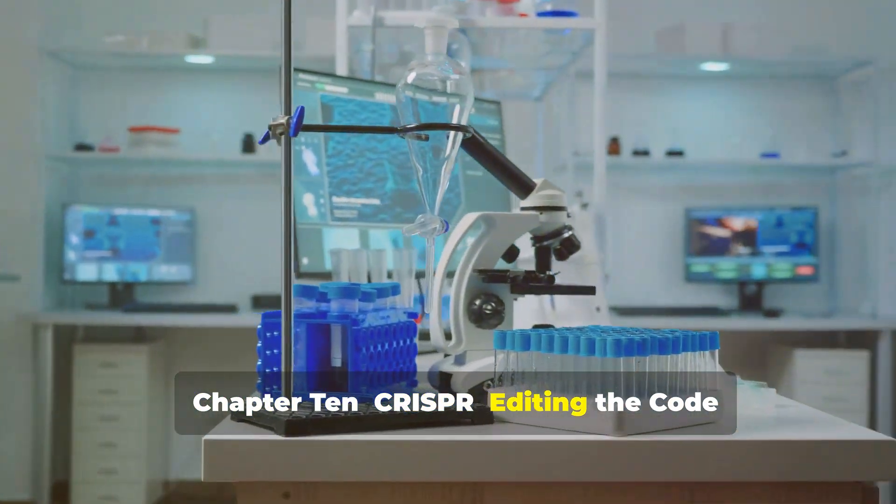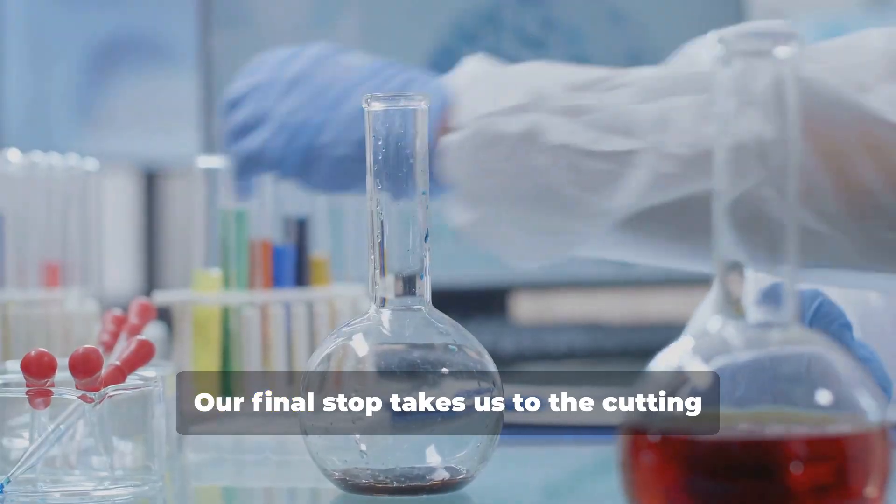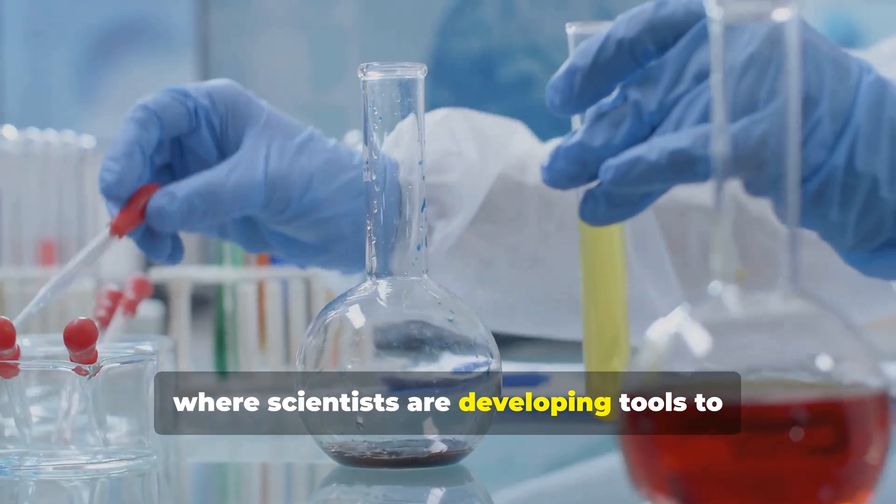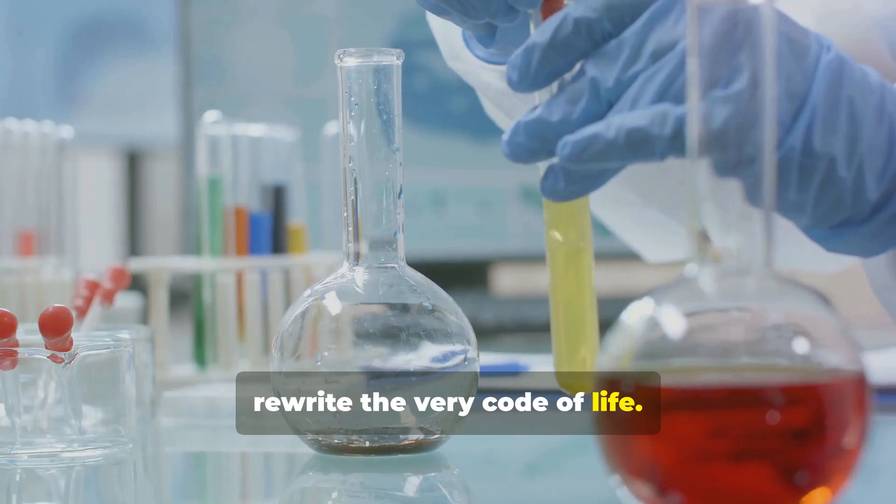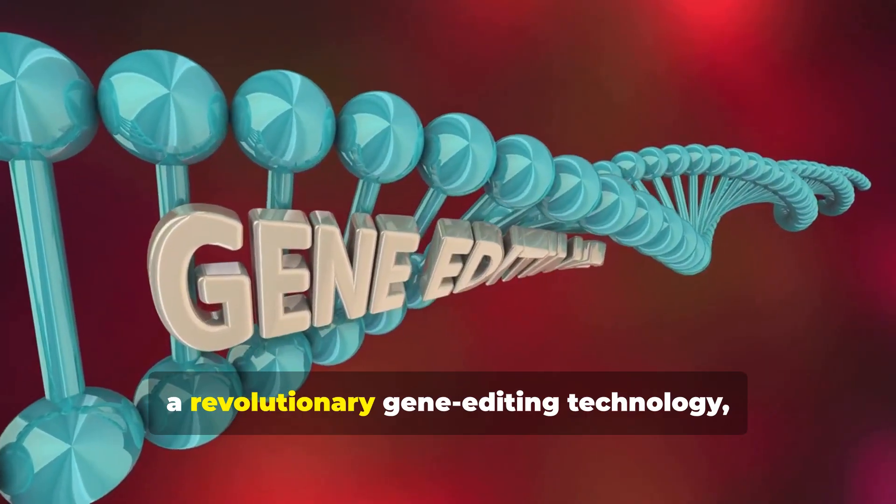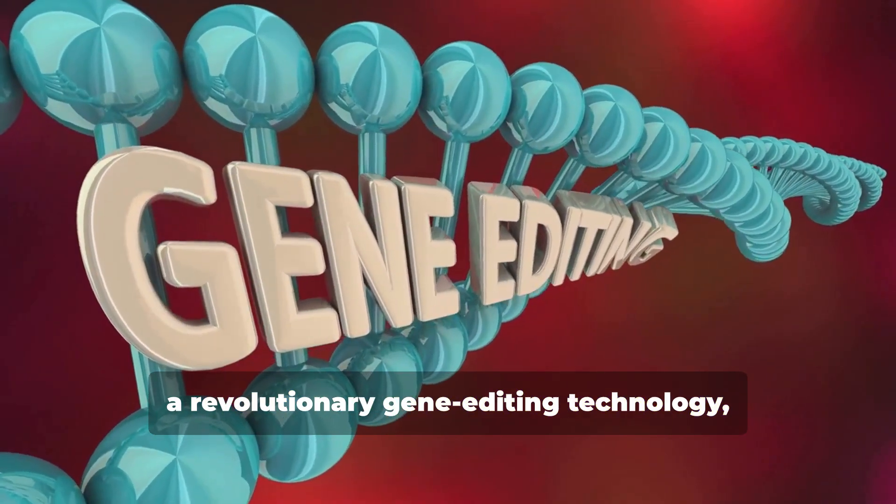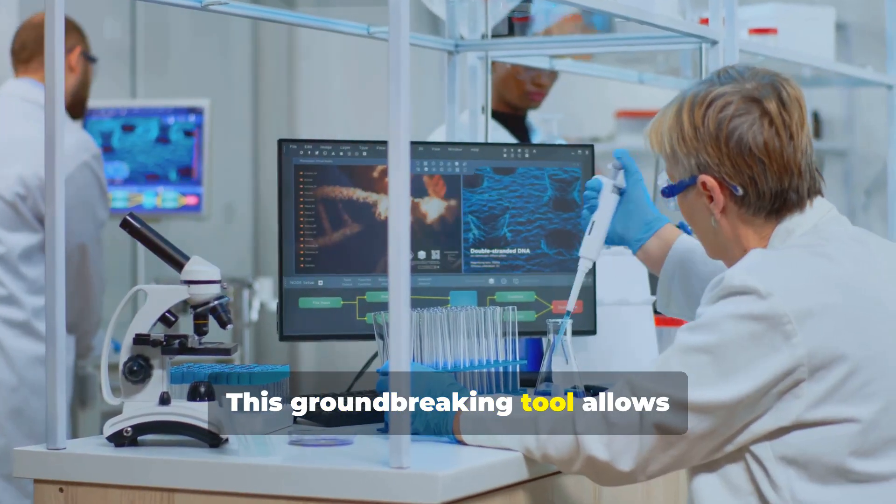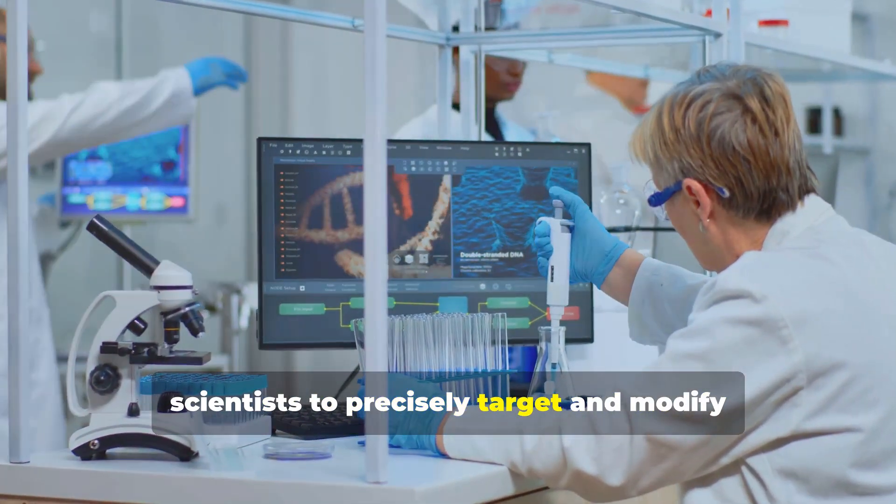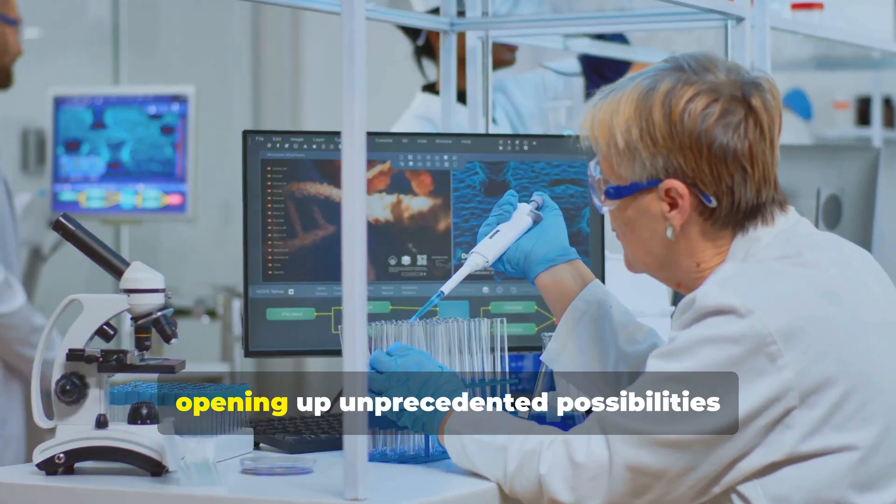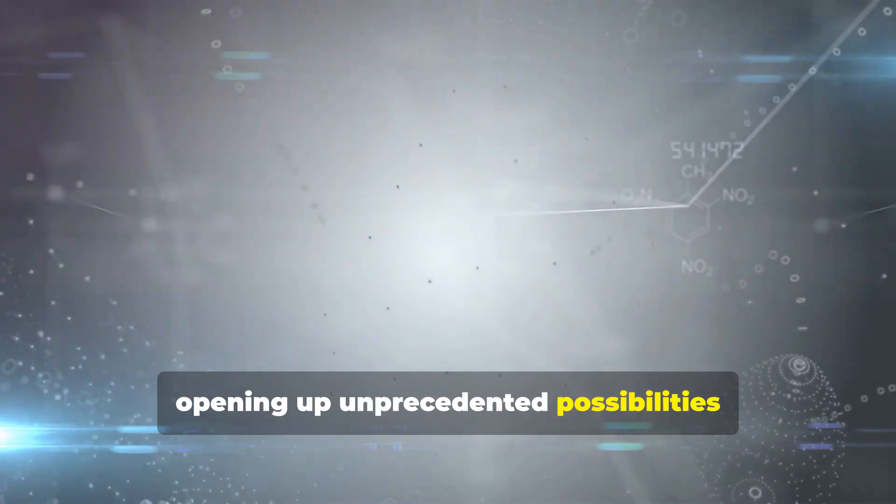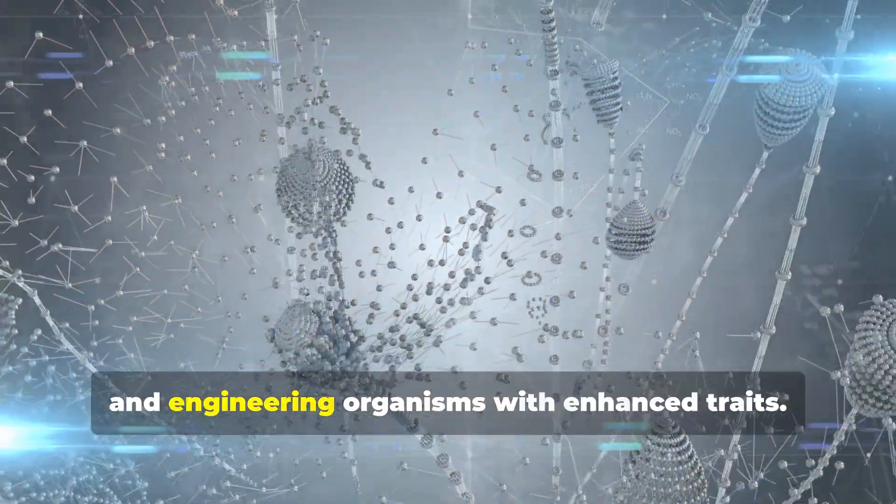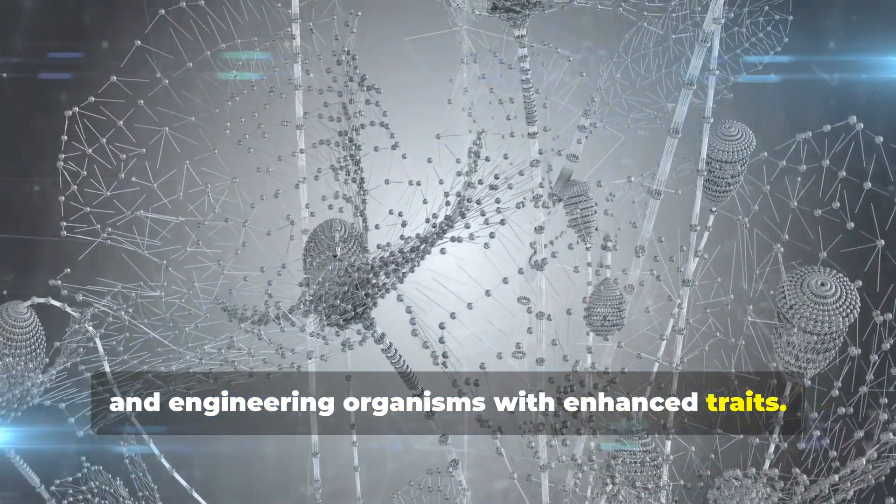Chapter 10, CRISPR editing the code of life. Our final stop takes us to the cutting edge of genetic engineering, where scientists are developing tools to rewrite the very code of life. CRISPR-Cas9, a revolutionary gene editing technology, has taken the scientific world by storm. This groundbreaking tool allows scientists to precisely target and modify DNA sequences, opening up unprecedented possibilities for treating genetic diseases, developing new therapies and engineering organisms with enhanced traits.